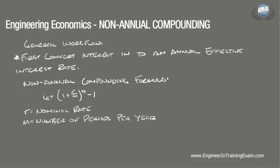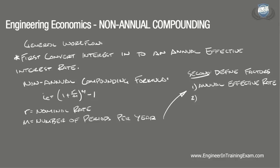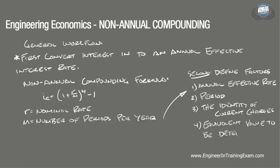Once the annual effective interest rate is determined, the goal remains the same as before: to convert transactions into equivalent transactions at some other point in time. The next step is to carry out the problem like any other time value problem by first determining the various factors of importance. These factors include: Number 1, the annual effective interest rate, which we've already established; Number 2, the period; Number 3, the identity of the current transactions — future, present, or annual; and Number 4, the equivalent value to be determined — future, present, or annual. Once these variables are defined, we can solve these problems in one of two ways: either by using the formulas found in the table on page 114, or using the functional notation version of these formulas and referencing the compound interest table starting on page 116, both in the NCEES Supplied Reference Handbook.